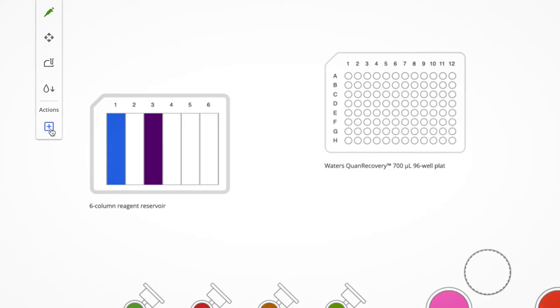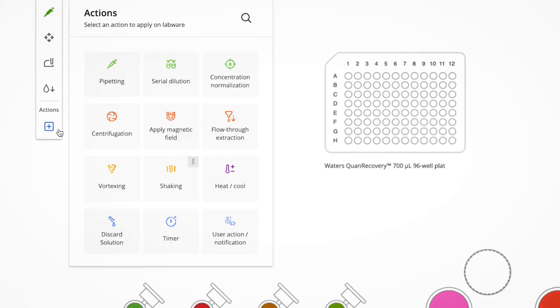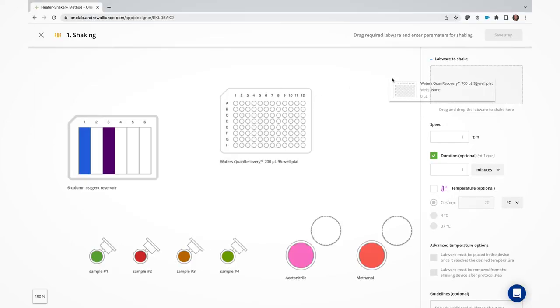This compatibility is also visible in the consumable information window, and you can even check to make sure you have that connected device in your lab. Next, to program a shaking action with integrated heating, click on the Actions button on the left panel, select Shaking from the list, drag and drop the consumable you want to apply the action to, and then select the three key parameters of that action: